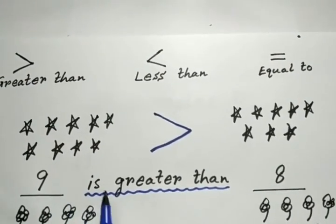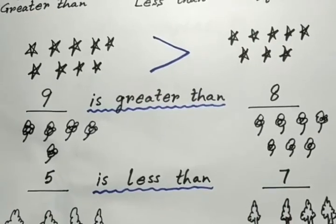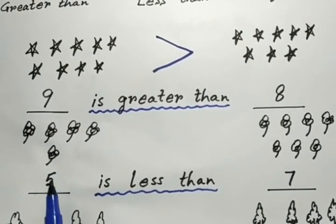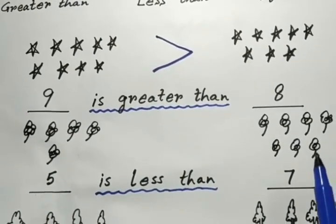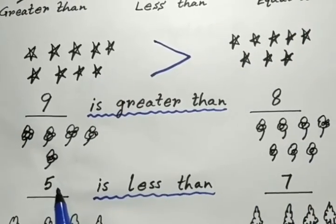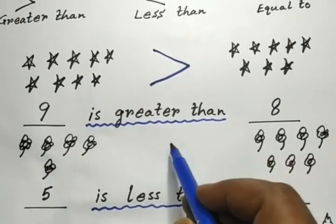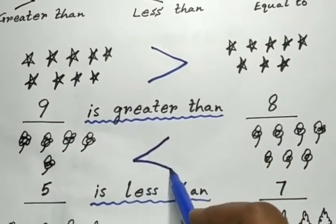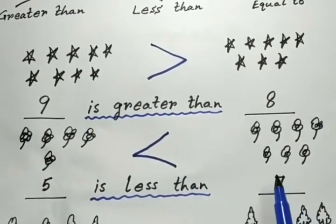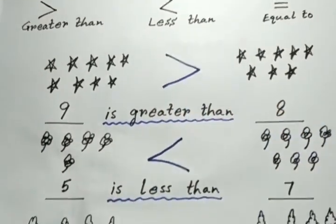Now look at the second group of pictures. Left side we have 5 flowers and right side we have 7 flowers. So the bigger number is 7, so we are going to use the sign and the open side will be facing to the bigger number. So here we have used less than sign.